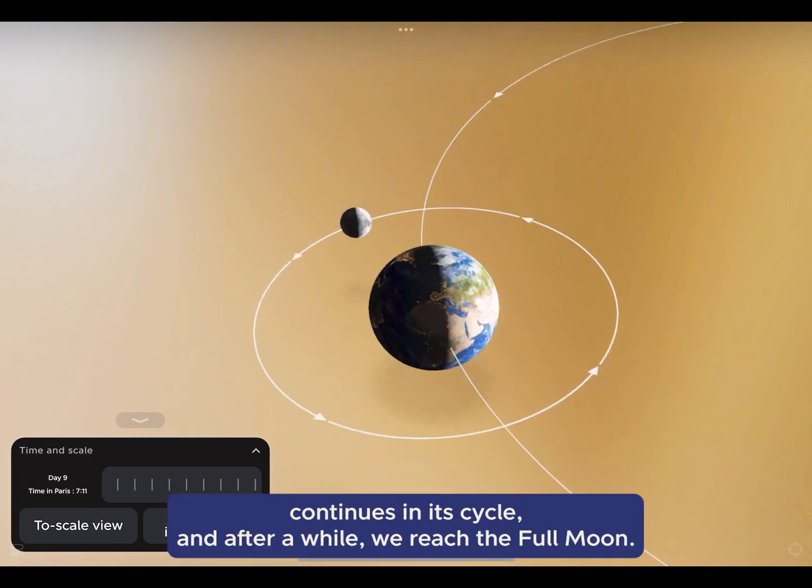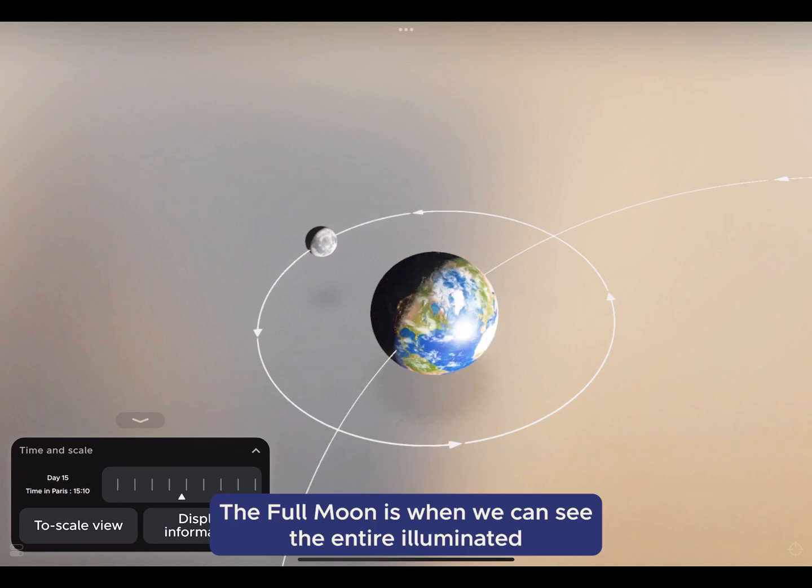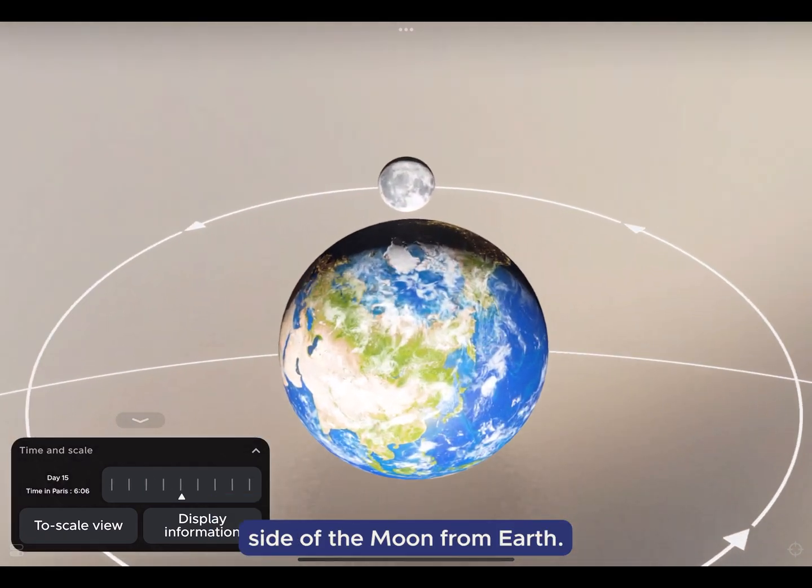Then, the Moon continues in its cycle and after a while, we reach the full Moon. The full Moon is when we can see the entire illuminated side of the Moon from Earth.